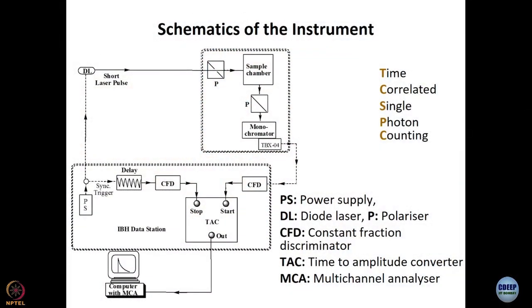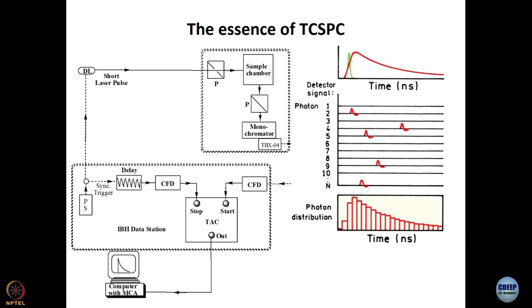In the previous module we studied the schematics of TCSPC, or time-correlated single photon counting. Let us revise what we have learned. The essence of TCSPC is that you record the difference in arrival times of a start and a stop signal and plot a histogram. This histogram is of the same shape as the fluorescence decay you are trying to construct.